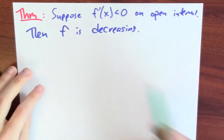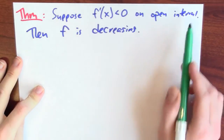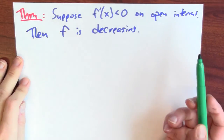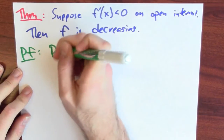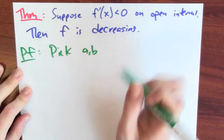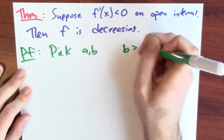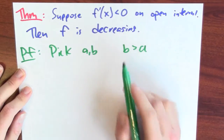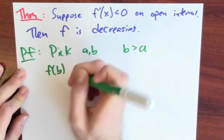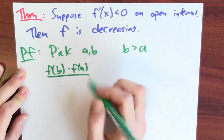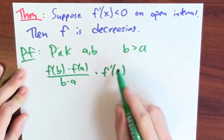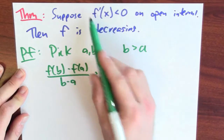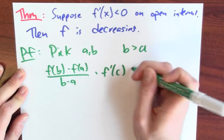Now I can play the same game when the sign of the derivative is negative. If the sign of the derivative is negative on some open interval, then I can conclude that F is a decreasing function. Again, this is just an application of the mean value theorem. I'm going to start by picking two points A and B in my open interval, again with B greater than A. Applying the mean value theorem, I look at [F(B) minus F(A)] over [B minus A], and the mean value theorem promises me this equals the derivative at some point C. I don't know what C is, but I know the derivative at any point is negative, so this must be negative.